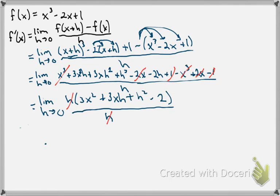We are now at the point where we can plug in 0 for h because it's no longer going to create 0 over 0 or indeterminate form. And we end up with 3x squared plus 3x times 0 plus 0 squared minus 2. And we see that all that we have left is 3x squared minus 2, which is our derivative.